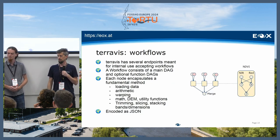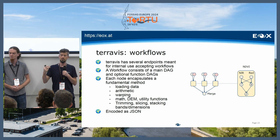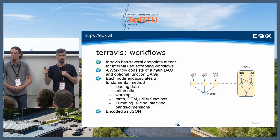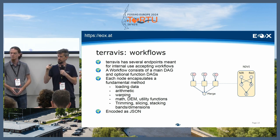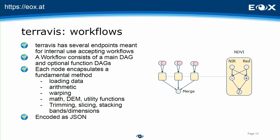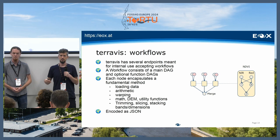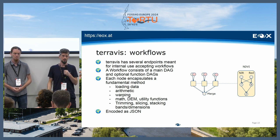The Teravis workflow is a JSON-based format describing atomic operations to produce the result. Each node in a directed acyclic graph — DAG — represents an atomic operation like loading data, warping data, or arithmetic operations. To avoid bloating the DAG, we allow reusable parts, similar to calling a function. Since each node is an atomic operation, it is very easy to parallelize, so we can scale well with multiple CPUs, doing many steps at once and smartly combining the results back into a single product.